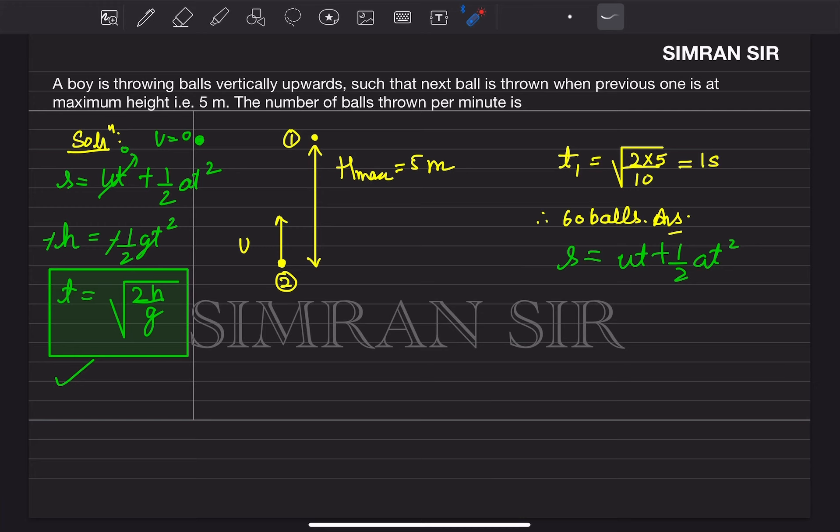The result is 1 second time. So the first ball takes 1 second to reach maximum height. When the first ball is at maximum height after 1 second, the second ball is thrown.